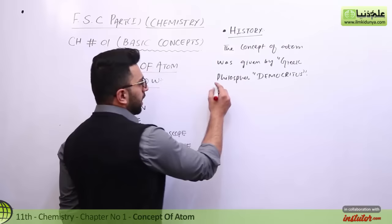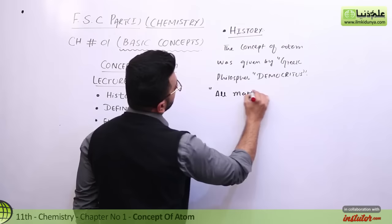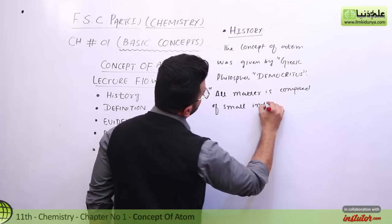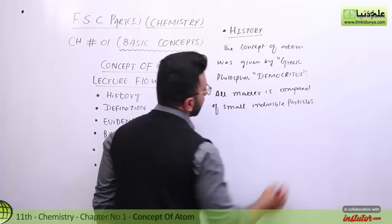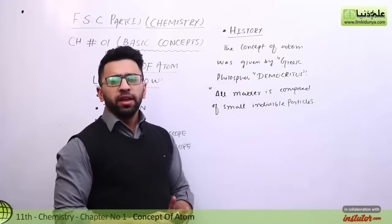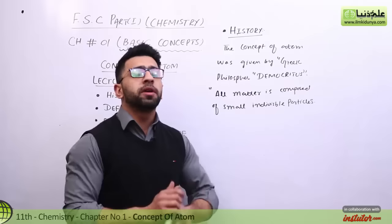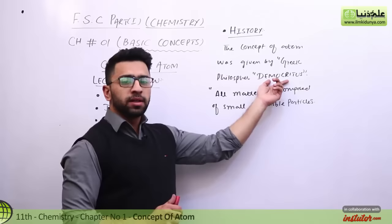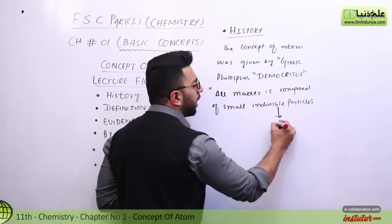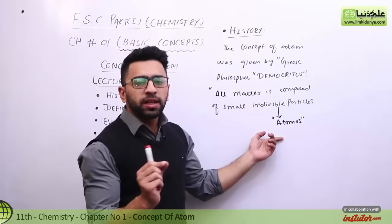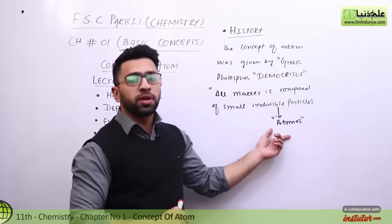According to Democritus, all matter is composed of small, indivisible particles. These are the most important parts, and the smallest indivisible particle is called an atom. The name Democritus gave was 'atomos,' and in the Greek language, any indivisible thing is called atomos.